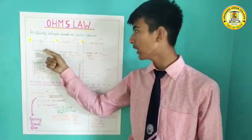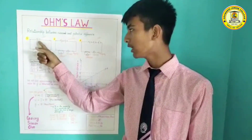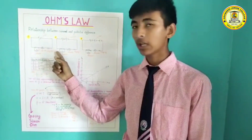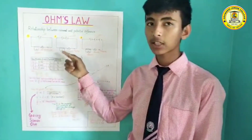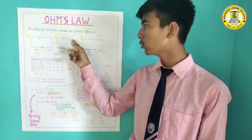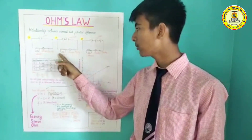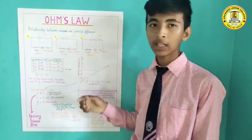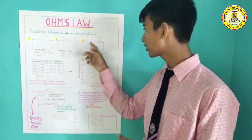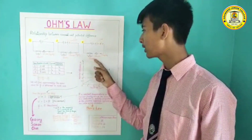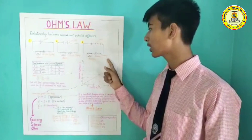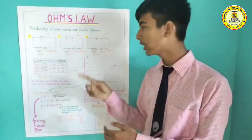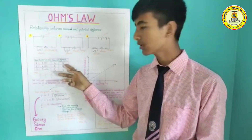In the first case, we connected one cell in a circuit along with a voltmeter, ammeter, and a plug key. In the second case, we connected two cells with one voltmeter, ammeter, and plug key. In the third case, we connected three cells with one voltmeter, ammeter, and plug key. From all three cases, we noted down the readings of the ammeter and voltmeter in a table.